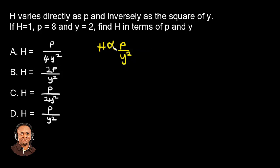So in order to change the sign, normally in a variation, we change the sign to equal sign. And the constant k will appear just as it is right now. So now that we have these, and in the second sentence, we're given values for h, p and y.